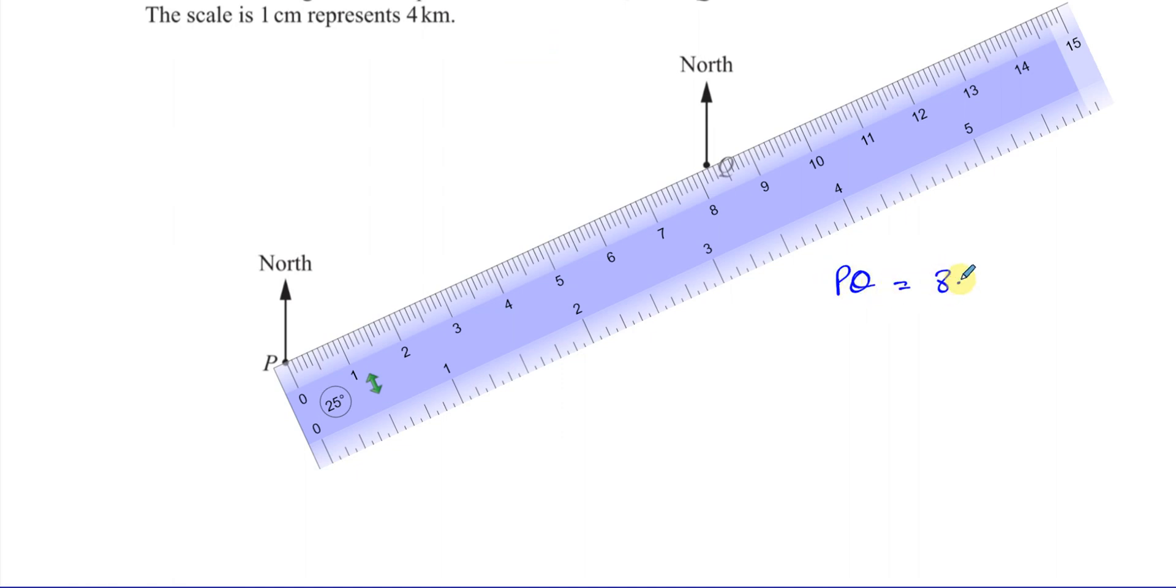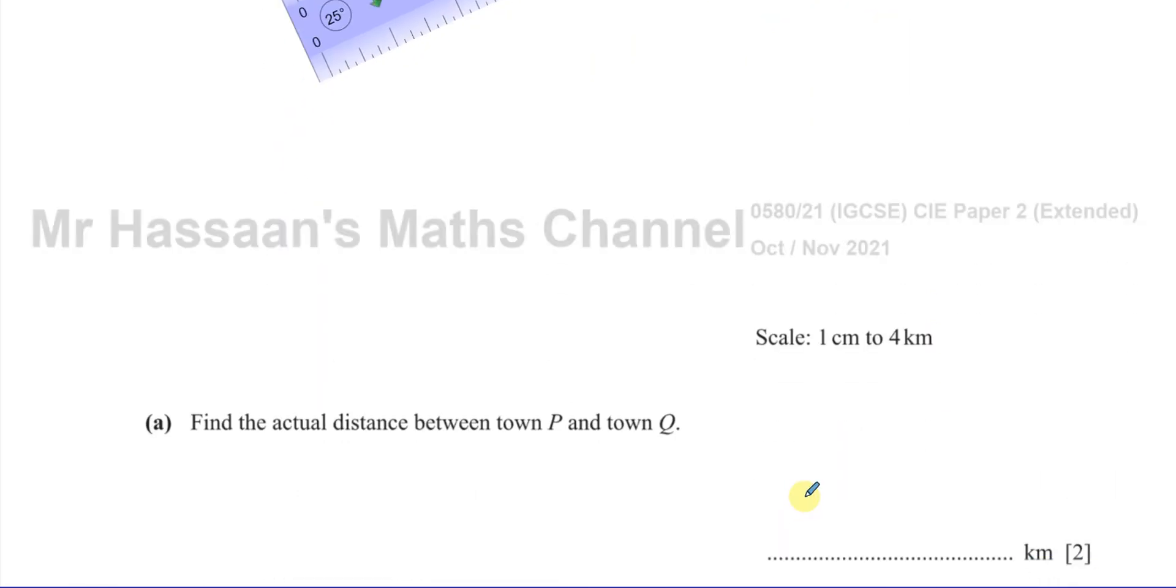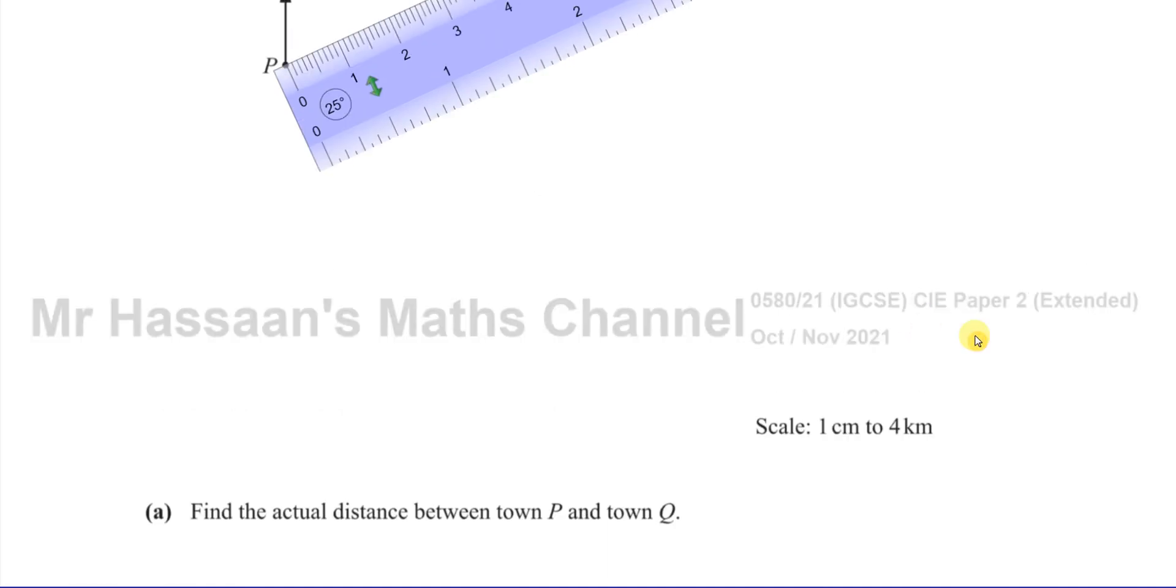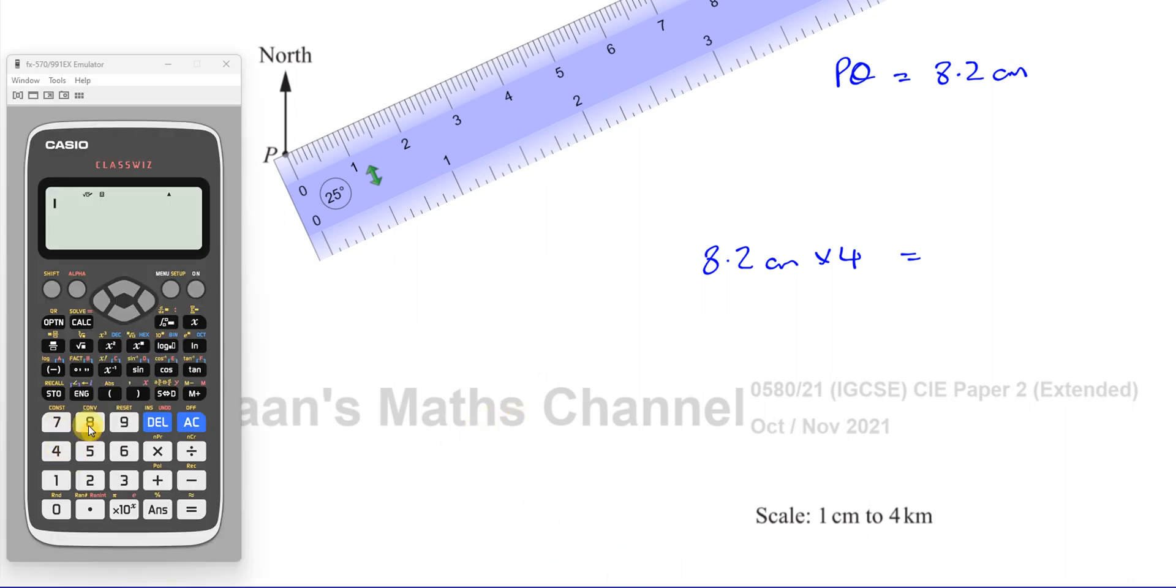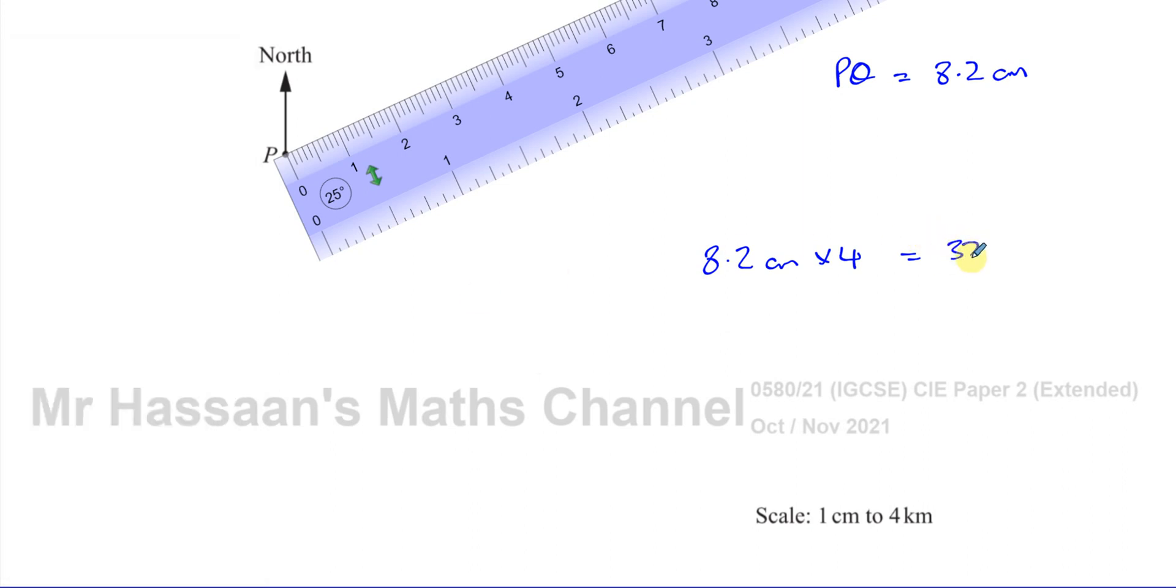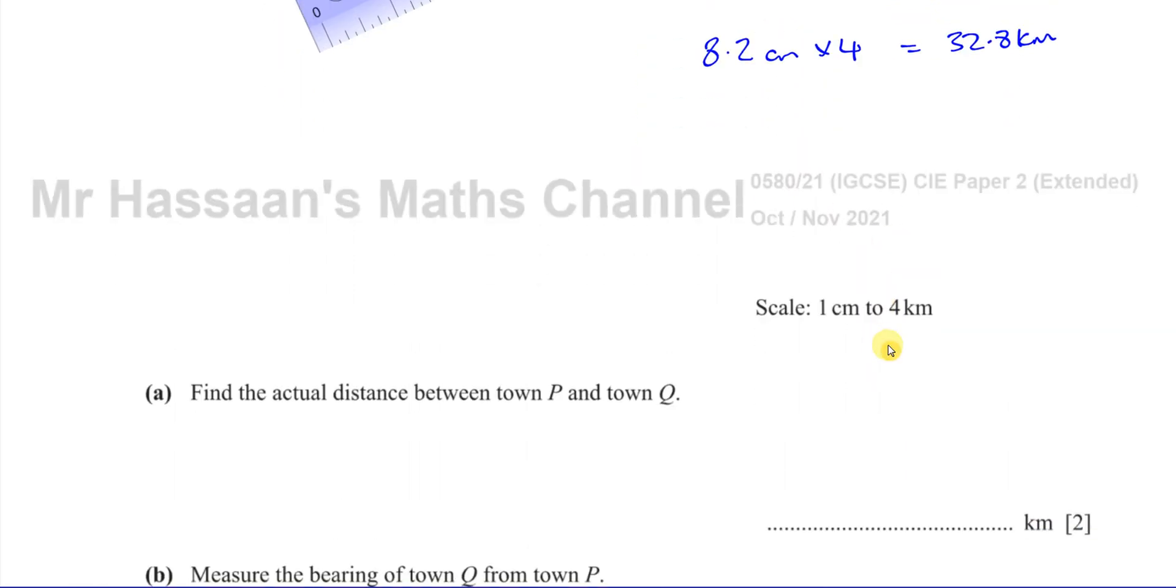So PQ is equal to 8.2 centimeters on the paper. But we want to find the actual distance between town P and town Q. So we say 1 centimeter is 4 kilometers. So we take 8.2 centimeters and we multiply it by 4. And that will give us the answer in kilometers. So we have 8.2 multiplied by 4, which gives us 32.8 kilometers. 1 centimeter is 4 kilometers. That means 8.2 centimeters you multiply it by 4. And that will be the answer in kilometers. So it's 32.8 kilometers. There's the answer to part A of this question.